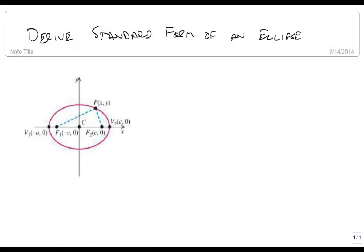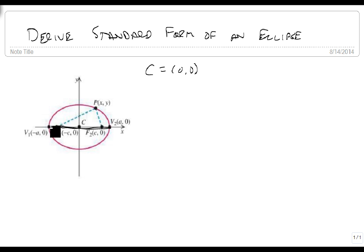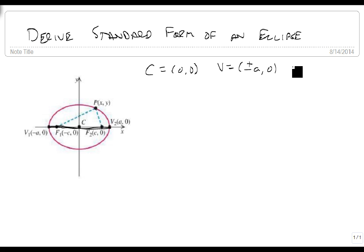We're now going to derive the standard form of an ellipse. What's really important here is to recognize that we're just defining this to be the major axis, but it doesn't have to be — this derivation works the other way as well. We're going to put our center at (0, 0), our vertices at plus or minus a along the x-axis, and the foci at plus or minus c.